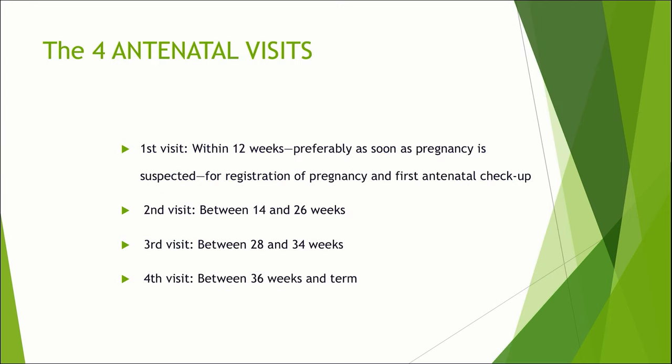Regarding the four antenatal visits: usually antenatal visits will be at least once a month for seven months, then once in two weeks in the eighth month, and then once a week. But there is a minimum of four antenatal visits recommended. The first visit should be within 12 weeks of pregnancy — preferably as soon as pregnancy is detected — for early registration and routine blood investigations. The second visit should be between 14 to 26 weeks. The third visit should be 28 to 34 weeks. The fourth visit should be between 36 weeks and term.